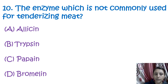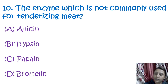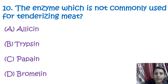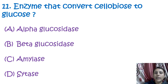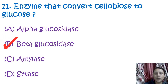The next question is: which enzyme is not commonly used for tenderizing of meat? We have already discussed that trypsin, papain, and bromelain are the enzymes used for tenderizing of meat. Allicin is the enzyme which is not required for the tenderizing of meat.